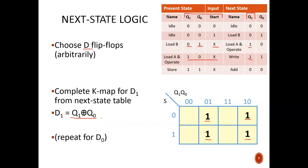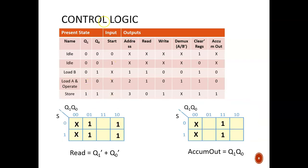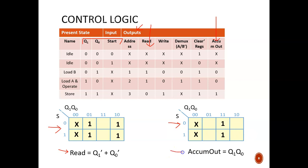You can repeat this process for D0. After that, we develop the control logic — the output signals sent to all the various microprocessor components. I copied the next state table and trimmed it to focus on the output logic, then picked two signals to derive equations. Looking at the read column, I create a K-map with the state bits as inputs and read as the output, yielding a simplified equation. Similarly, the accumulator output signal gives its own K-map and resulting equation.